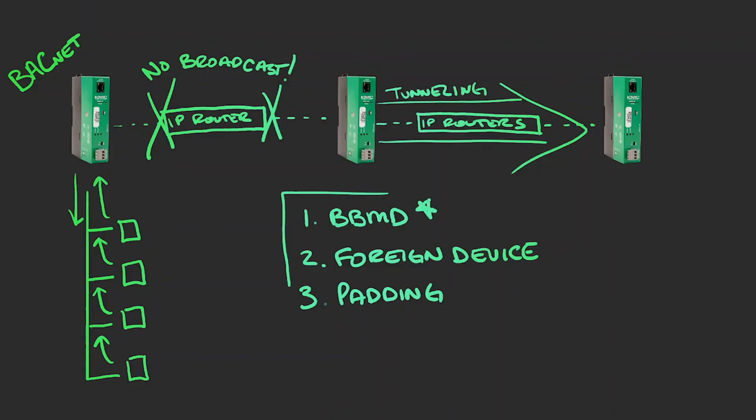The most commonly used BACnet tunneling method involves BACnet routers configured with the BBMD and foreign device functions. Since padding is rarely done, we will not discuss that one here.